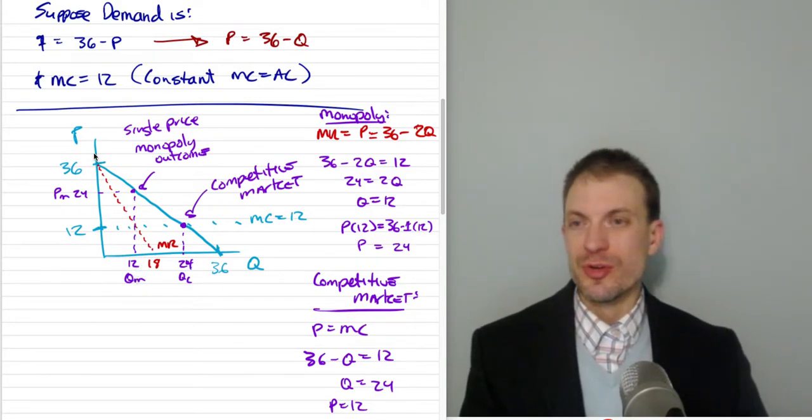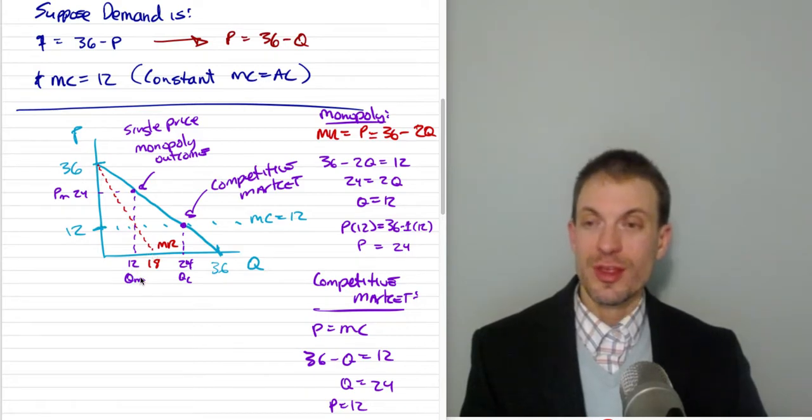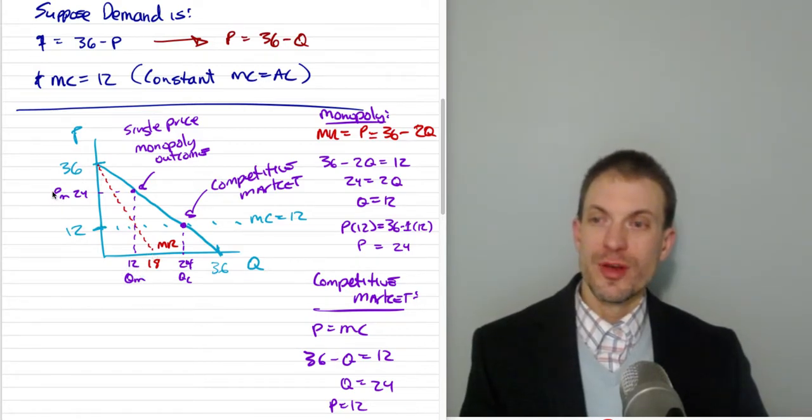So the monopoly facing this demand curve and marginal revenue curve produces a quantity of 12 at a price of 24.